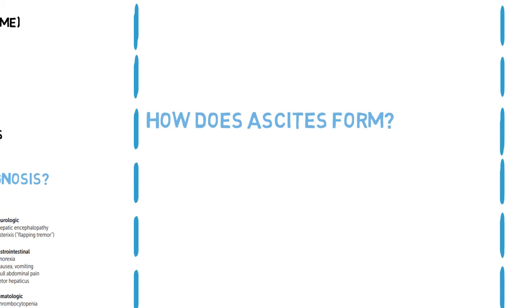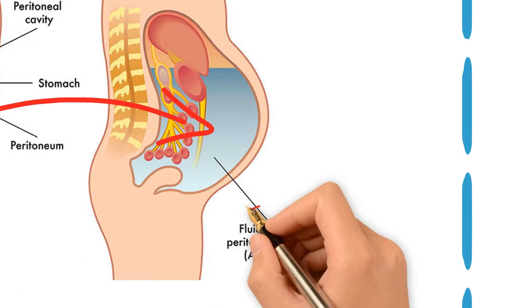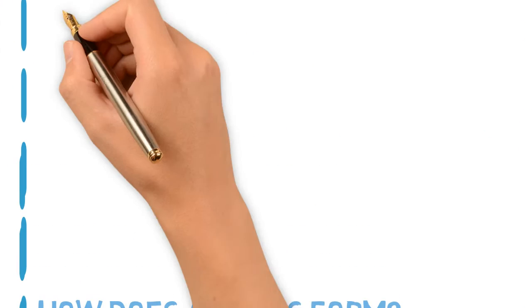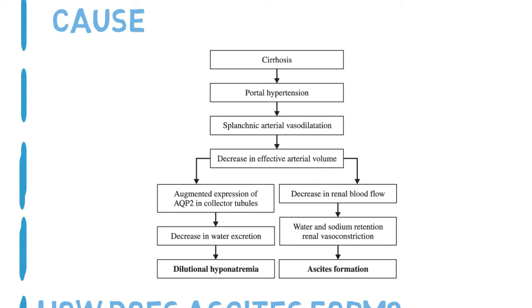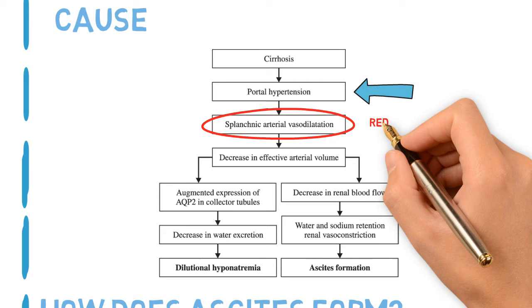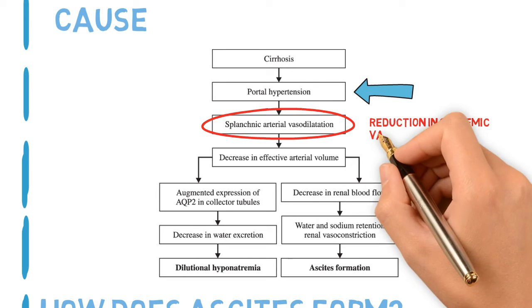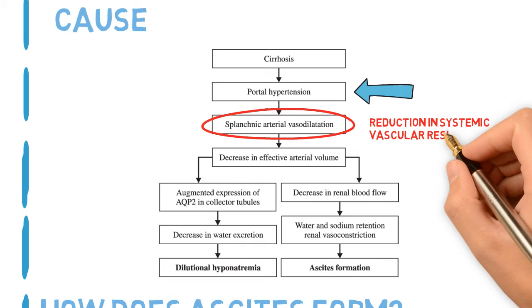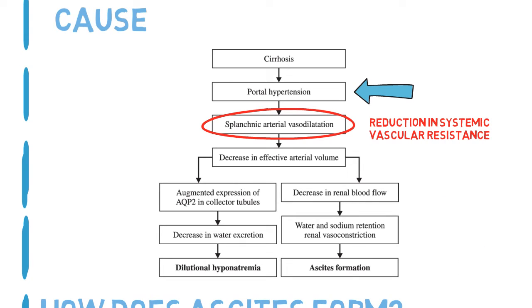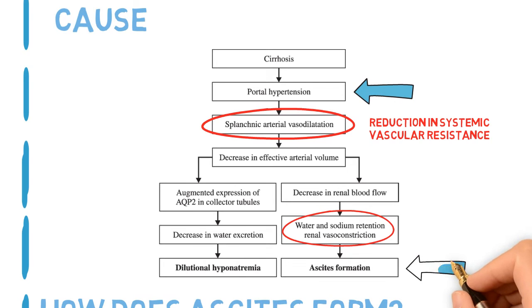How does ascites form? Ascites refers to a pathological buildup of fluid in the peritoneal cavity; the most common cause is cirrhosis. Portal hypertension is a prerequisite for ascites formation; however, many other factors contribute. In particular, systemic vasodilation and reduction in systemic vascular resistance (SVR) contribute to activation of endogenous vasoconstrictors, including the renin-angiotensin-aldosterone system (RAAS). This allows for sodium and water retention.